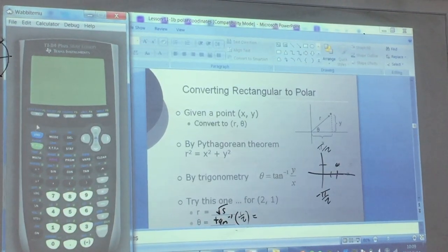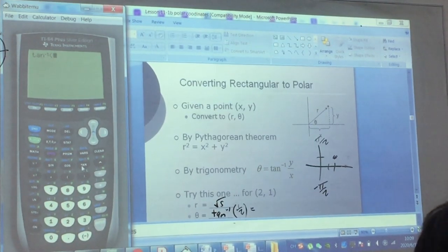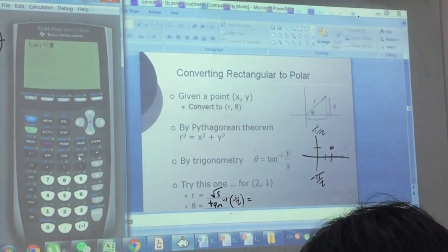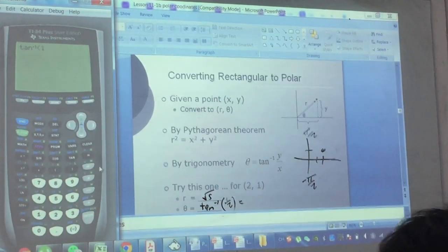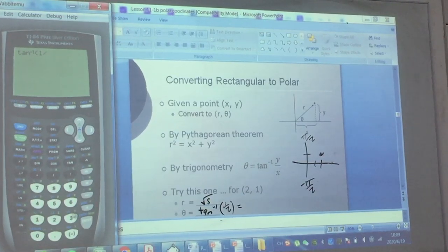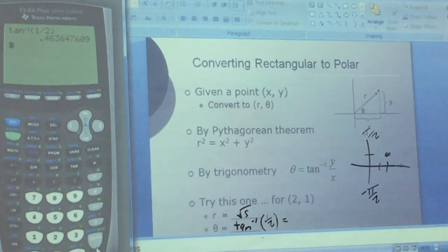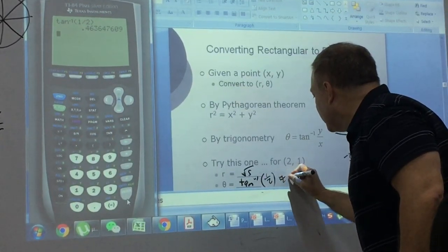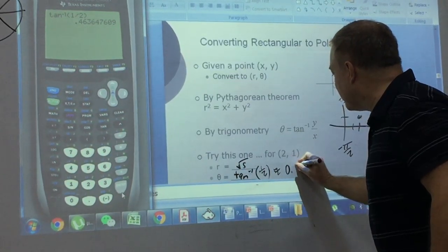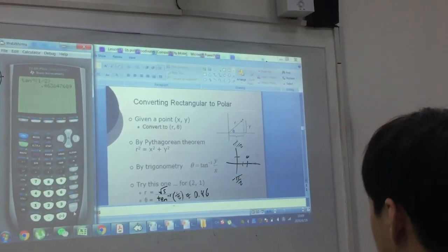Let's go ahead and do this. This is second inverse tangent of one-half. So we type in 1 divided by 2. And there we go. Let's just round this off to two decimal places, so this is approximately 0.46. That's not so bad, right?